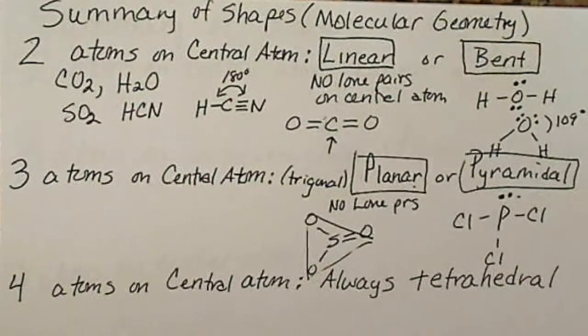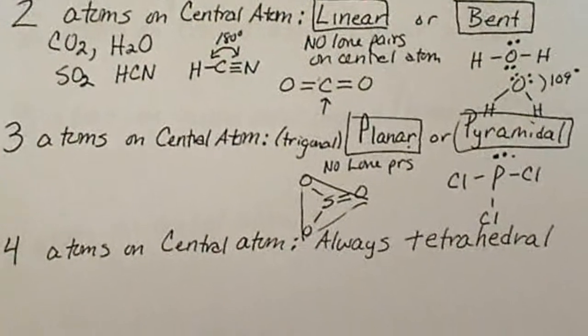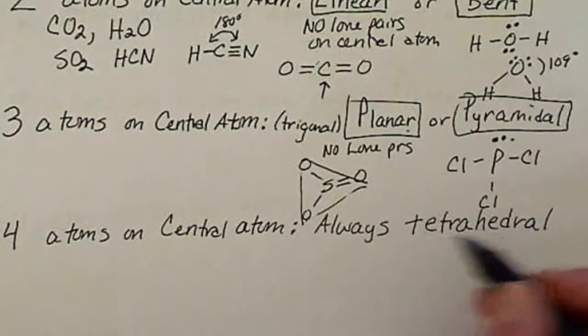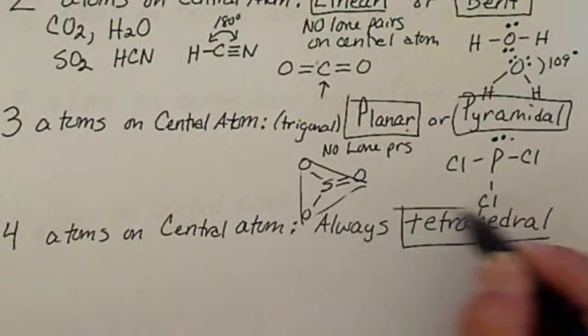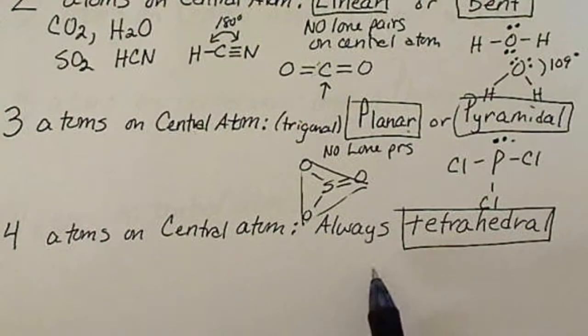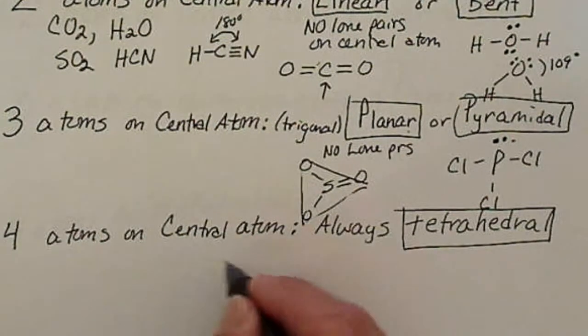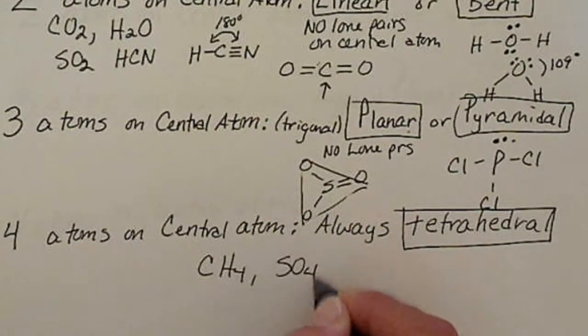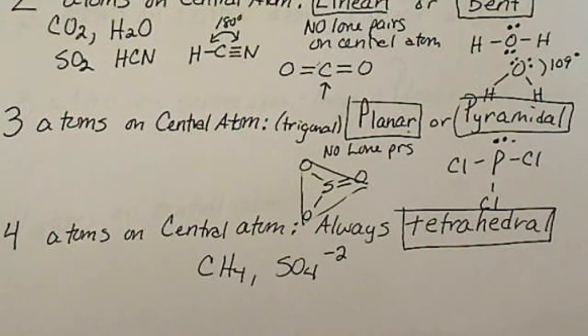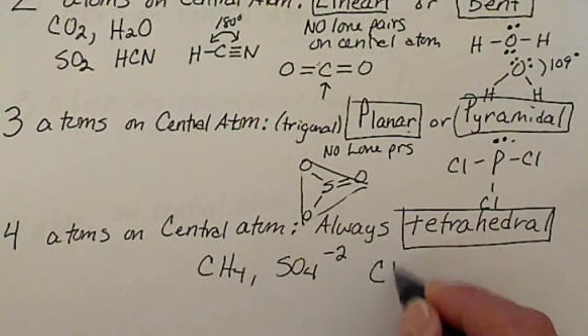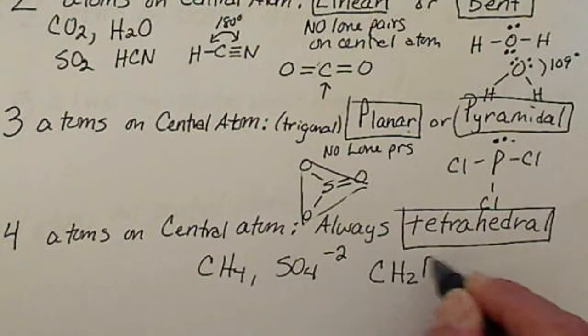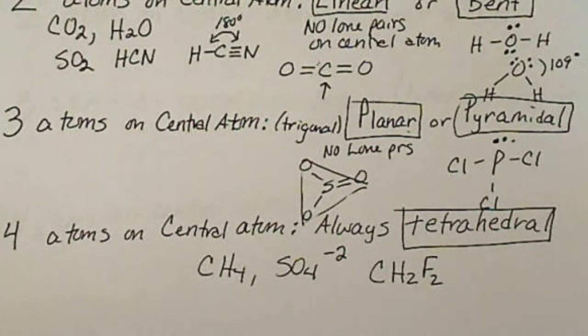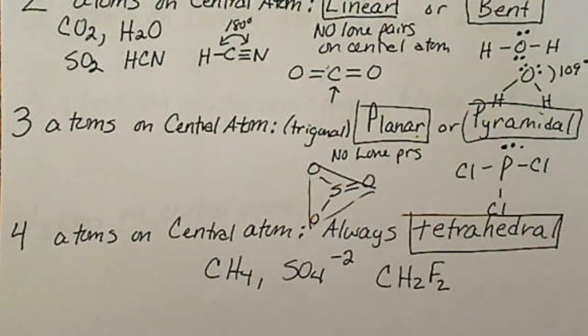If there are four things around the central atom, that shape is always tetrahedral because there can't be lone pairs. So this would be CH4, SO4 minus two (the polyatomic ion sulfate). The groups around the central atom don't have to be the same, so that would also be tetrahedral.